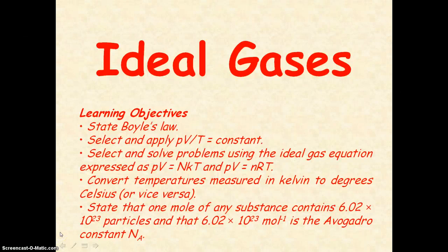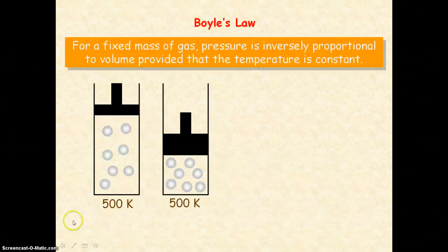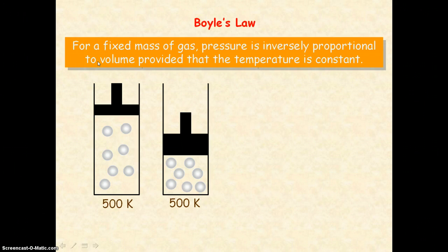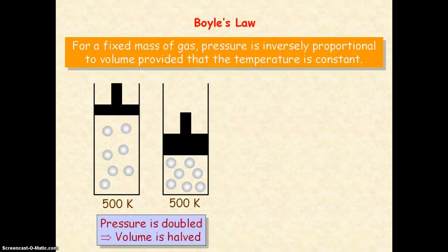We're going to be looking at ideal gases — these are gases that obey the gas laws perfectly. The first gas law you need to know is Boyle's law, which says that for a fixed mass of gas, the pressure is inversely proportional to the volume, provided that the temperature is constant. What this means is that if the pressure is doubled, then the volume will be halved.